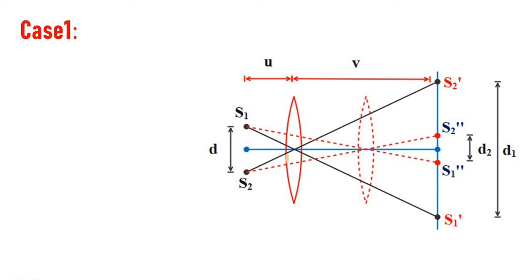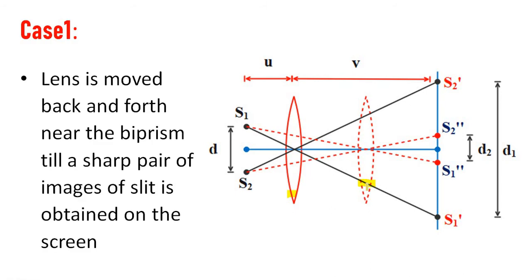Case 1. The lens is moved back and forth near the biprism till a sharp pair of images of the slit is obtained on the screen.